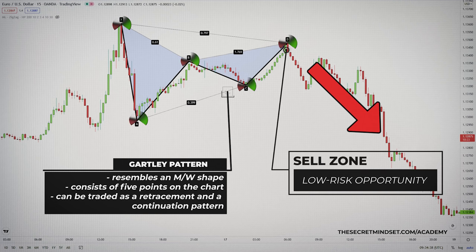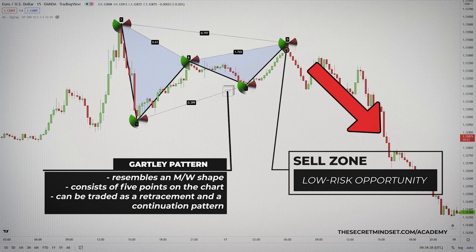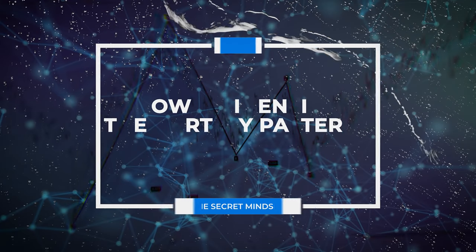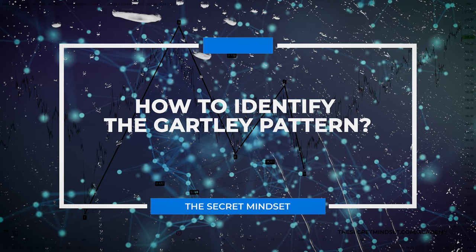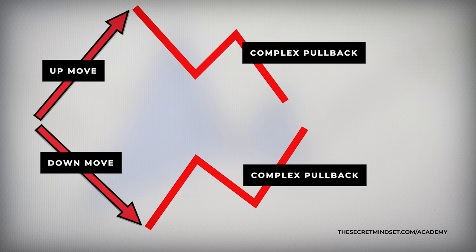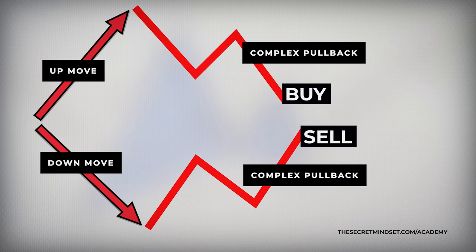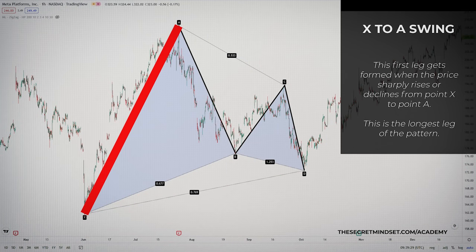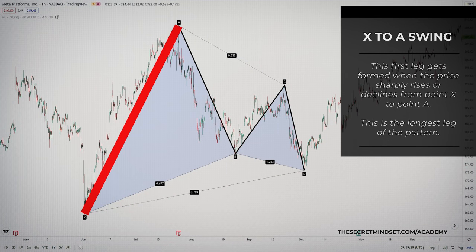It provides a low-risk opportunity for traders to enter the market where the pattern finishes and the trend comes back. The Gartley pattern depends on several movements in price, and every swing has to confirm certain Fibonacci levels. To make it very simple, let's look at each component of the Gartley structure. The movement begins with X to A — there are no specifics for this leg. The first leg gets formed when the price sharply rises or declines from point X to point A.